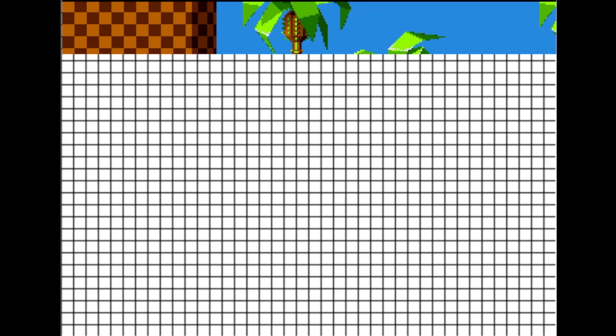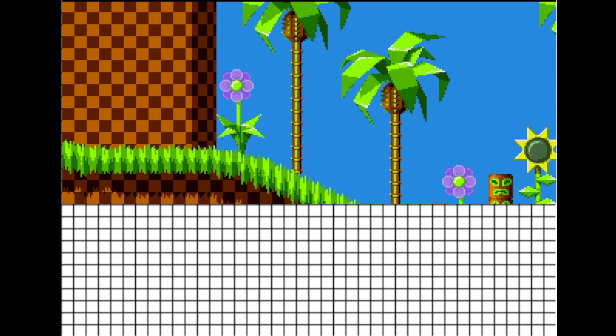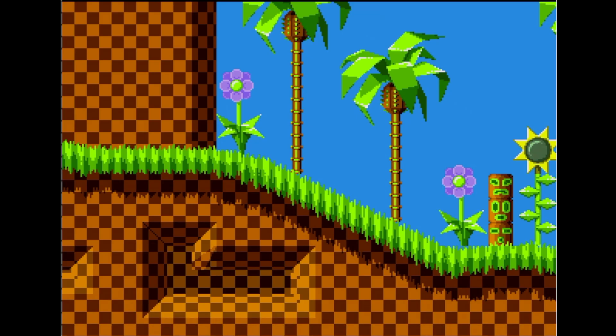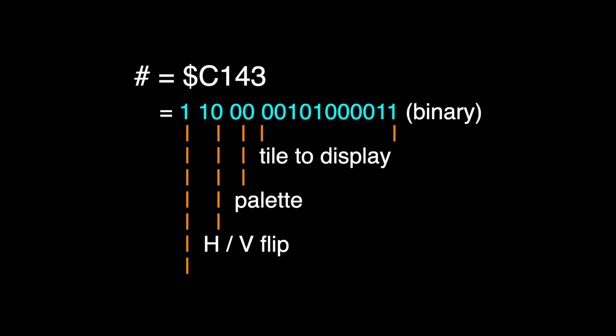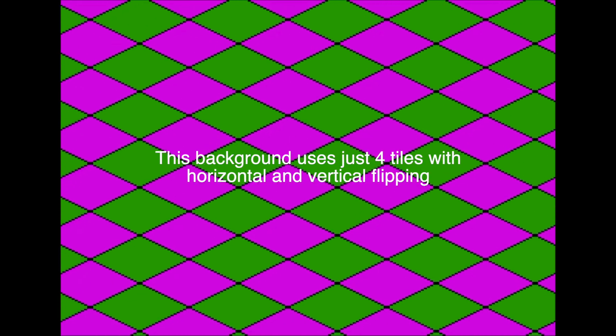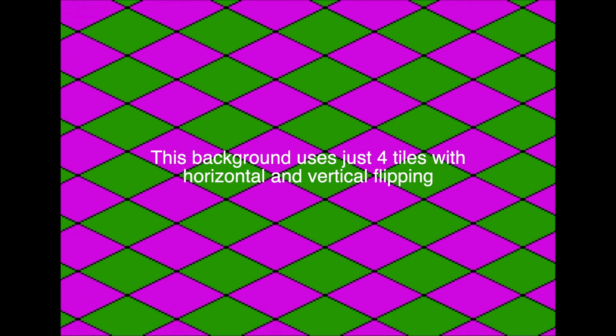Then it starts again under the top left tile and repeats all the way down the screen until it's defined all the rows, usually 32. The number stored in each location of the tile map tells the machine which tile to display, which one of the four palettes to use, and whether it needs any horizontal or vertical flipping. What's great about tile maps is that you can create an entire screen using just one tile and repeating it everywhere, getting interesting screens using just a few different tiles and repeating and flipping them. This obviously saves a lot of memory.